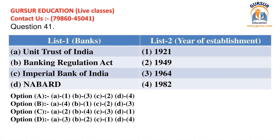Question number 41. Two lists are given. Match list 1 (Banks) with list 2 (Year of Establishment). Below are given the options with different matches. You can pause the video and choose the appropriate answer. The right answer is Option D. We suggest you to pause the video to analyze and learn the correct combination.